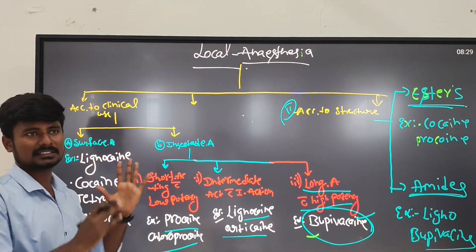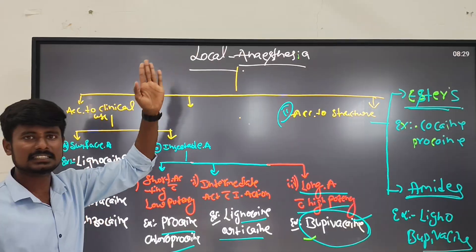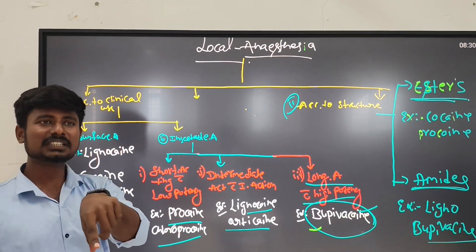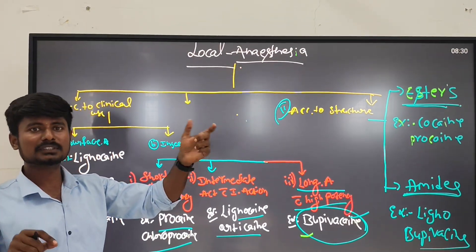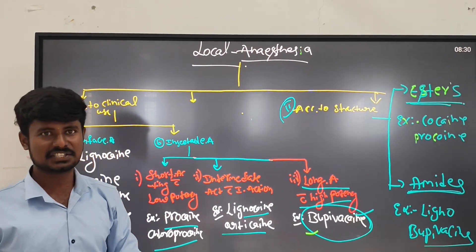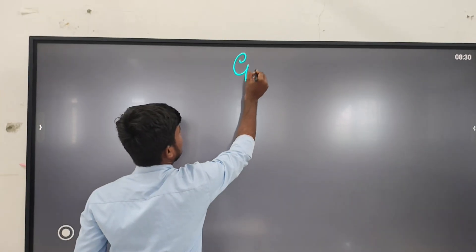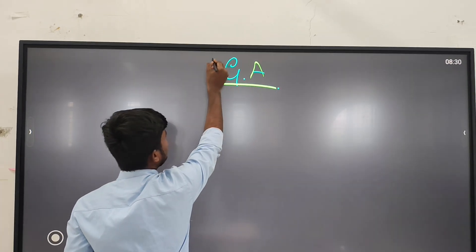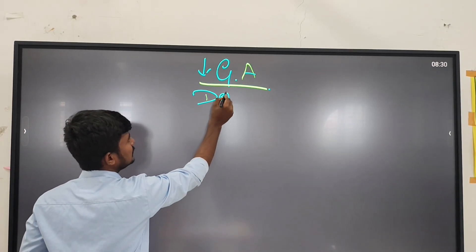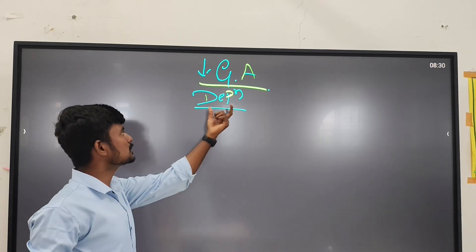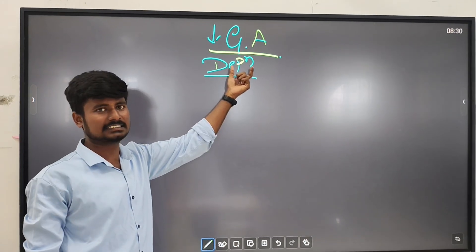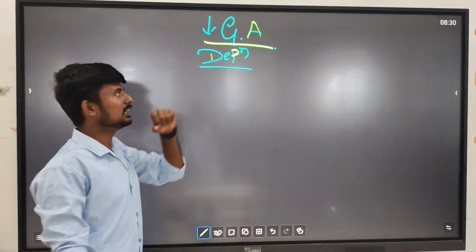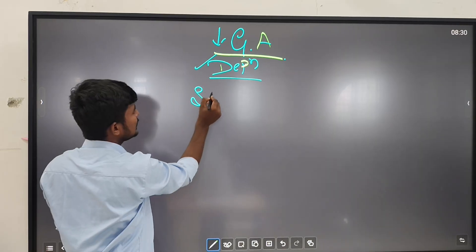This classification of local anesthesia comes for 5 marks. For a 10-mark question asking to explain side effects and therapeutic uses of any one general anesthetic, write the definition of general anesthesia first: reversible loss of sensation along with loss of consciousness with skeletal muscle relaxants. Then write the stages of general anesthesia.